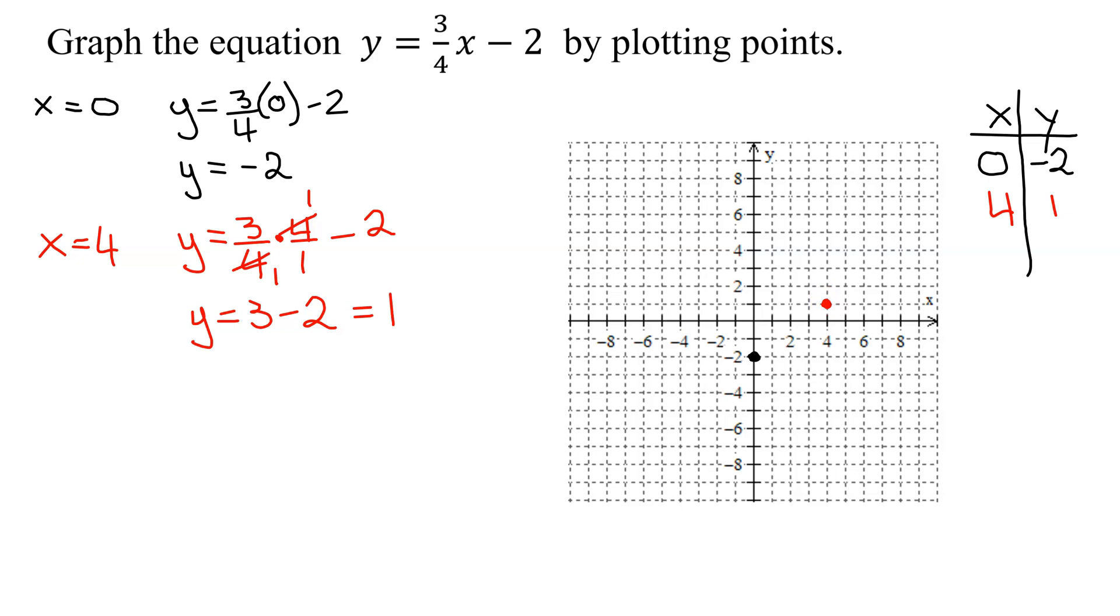Now I need one other point. And I think since I've gone over to the right, I want to go over to the left to get some points down here. So I'm going to pick x equals negative 4, again, a multiple of my denominator.